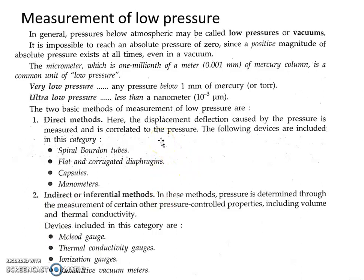In case of direct methods, the displacement or deflection caused by the pressure is measured and correlated to the pressure. Some direct methods include spiral Bourdon tubes, flat and corrugated diaphragms, capsules, and manometers.